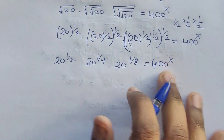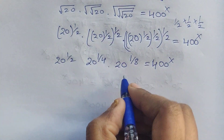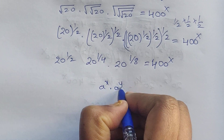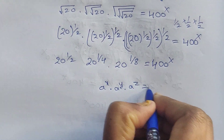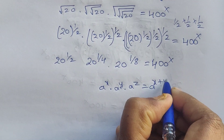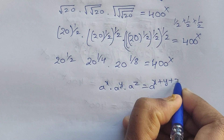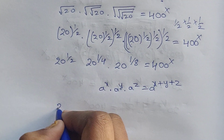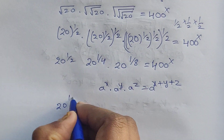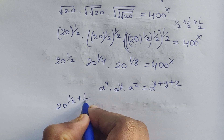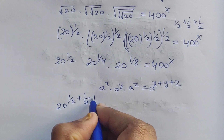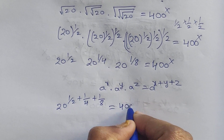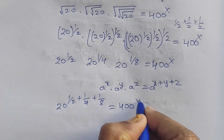Now, using the formula: a to the power of x times a to the power of y times a to the power of z equals a to the power of x plus y plus z. Applying this formula, we get 20 to the power of 1/2 plus 1/4 plus 1/8, equal to 400 to the power of x.